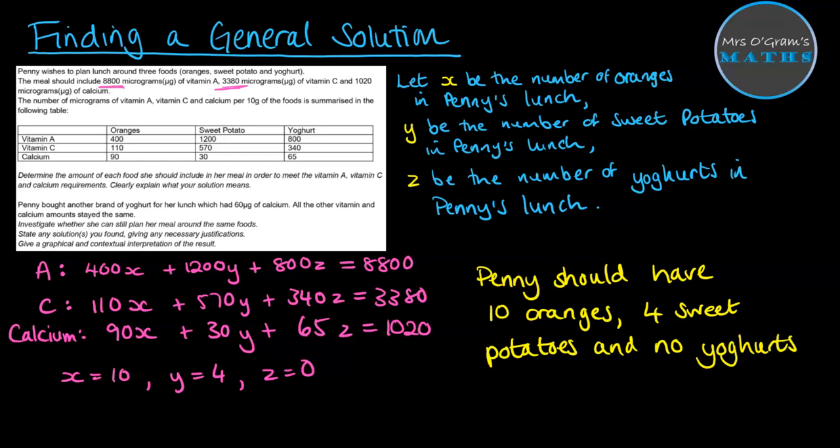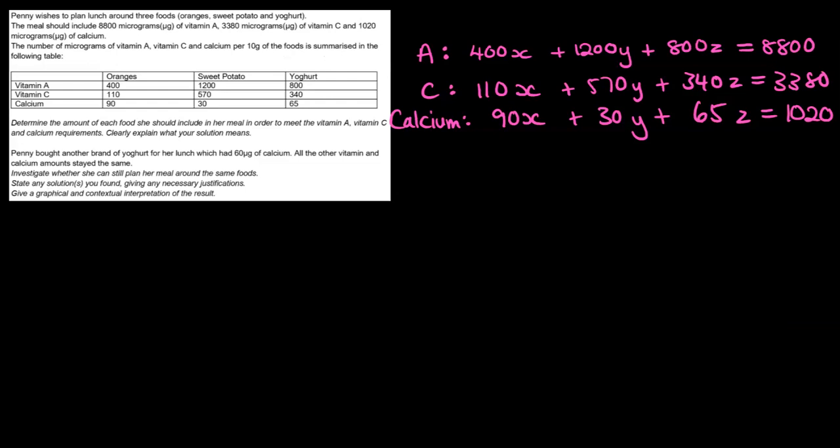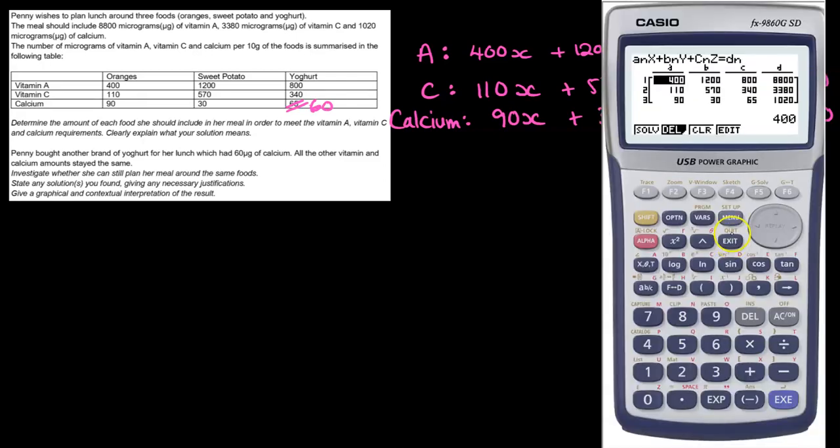Let's take a look at the next thing, which is that Penny has switched up the brand of yogurt being used. This yogurt now has 60 micrograms of calcium instead of the 65 that we started with. So we'll change that 65 in our equations and see what happens. Instead of the 65 for the calcium, we now have 60. If we put that into the graphics calculator and try and solve it, we get a mass error. So we need to go down the algebraic route.